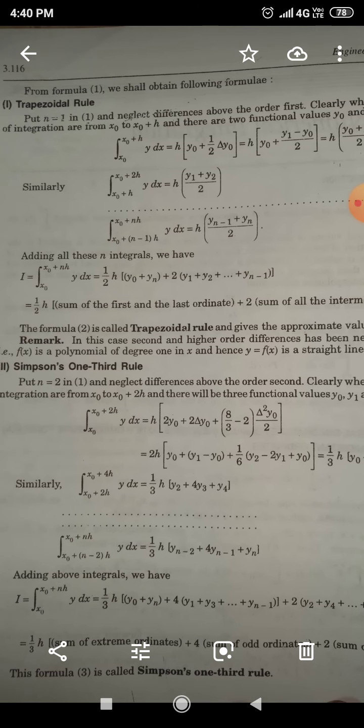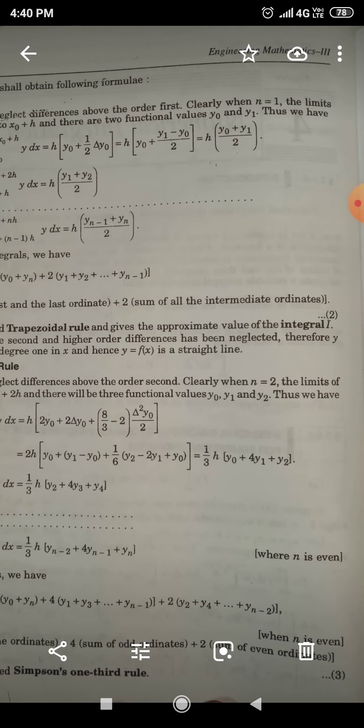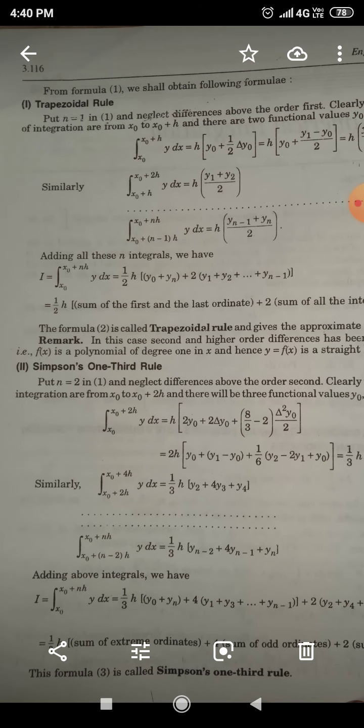We put N_u equal to 1 in this equation. Neglect difference above the order first. Clearly when N_u equals 1, the limits of integration are from X_0 to X_0 plus H. So limit will be X_0 to X_0 plus H, that is why N_u equals only 1.